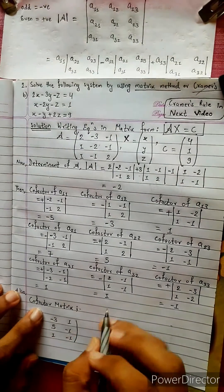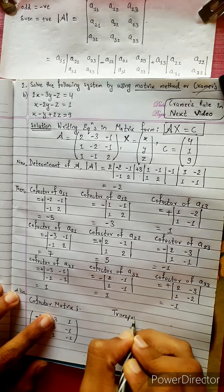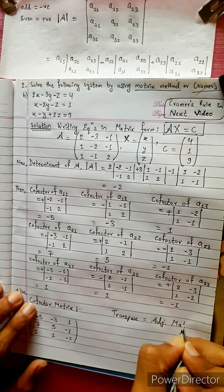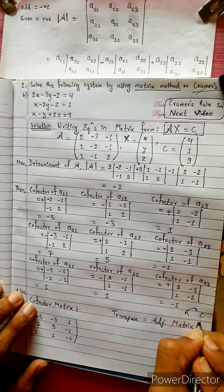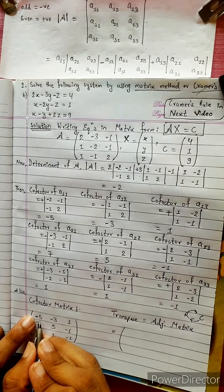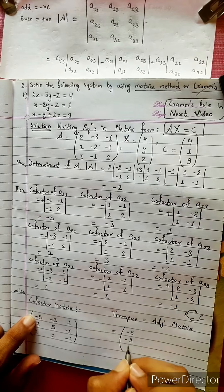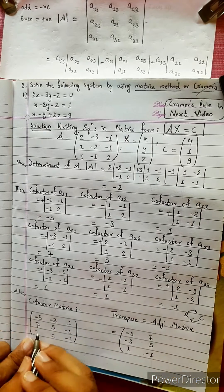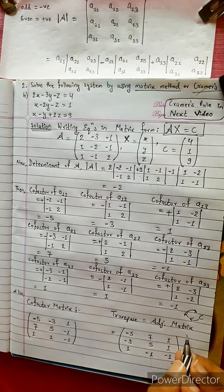I will call this the transpose. I will call this the adjoint matrix. Converting row to column: the first row becomes the first column. The adjoint matrix is: minus 5, 7, 1; minus 3, 5, 1; 1, minus 1, minus 1. This is the adjoint (transpose) matrix.